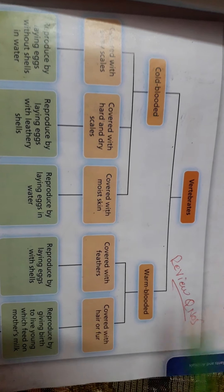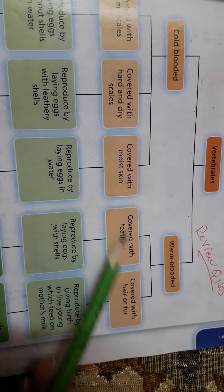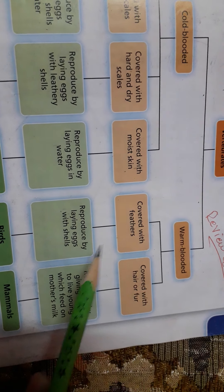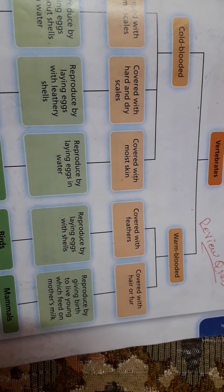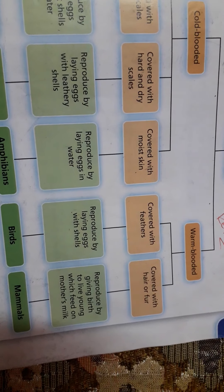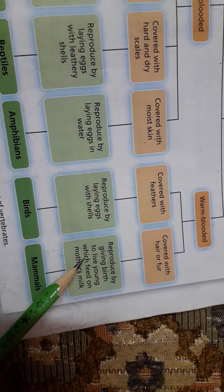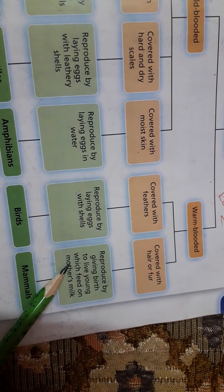The second main group of vertebrates is warm-blooded animals, which are of two types. First, animals whose bodies are covered with feathers — they reproduce by laying eggs with shells. For example, birds. Second, animals whose bodies are covered with hair or fur — they reproduce by giving birth to live young, which feed on mother's milk. They don't lay eggs; they directly give birth to live young. For example, mammals.